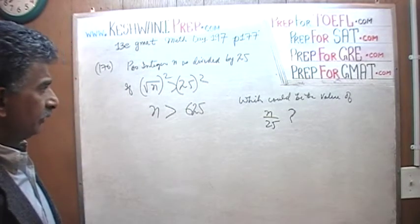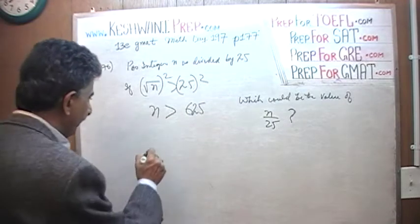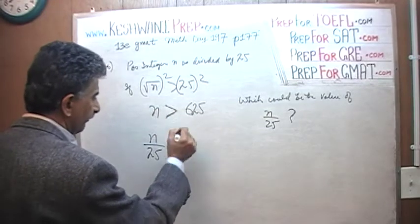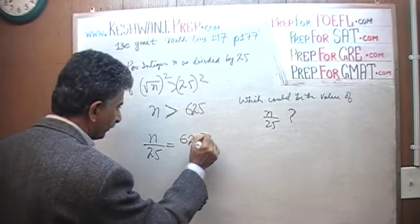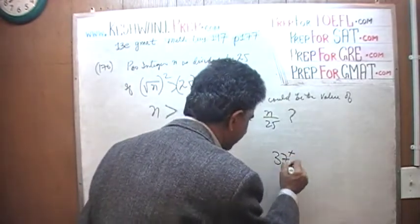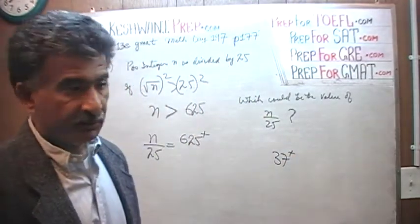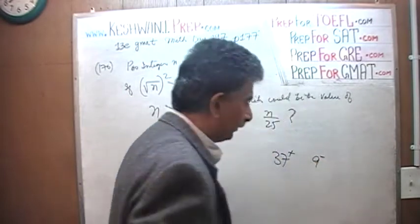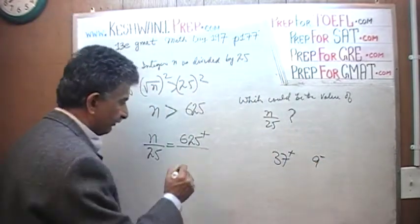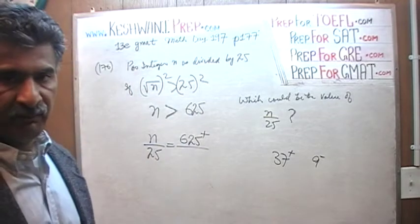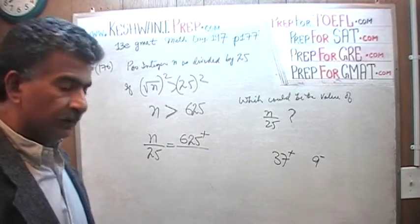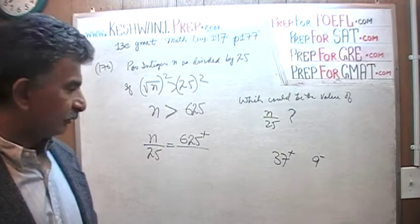Question simply is, which of the following could be the value of n over 25? n over 25, and we just found out this is more than 625. So if you have something more than 625, this is how we write something more than that. 37 with a plus sign means something more than 37. 9 with a negative sign on top of it means something less than 9. So here we have something more than 625. Whether it's a little bit more than 625 or just a hell of a lot more than 625, it doesn't really matter. What matters to us is that it is more than 625.